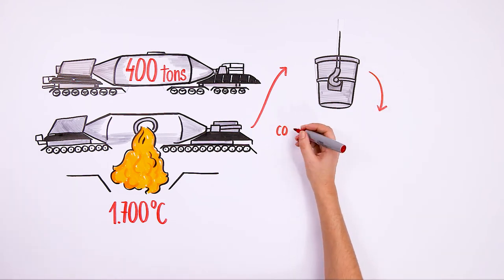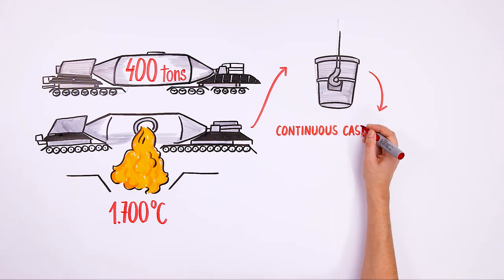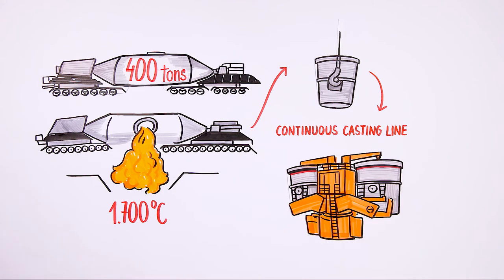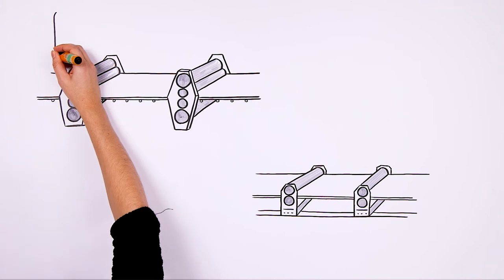The converter produces liquid steel that is further sent to a continuous casting line wherein it is processed into slabs or billets. In this form, as a semi-finished product, steel can already be delivered to the customer.